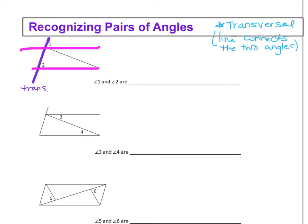This is the line giving us angle two. This other line we do not need — we're going to completely ignore it. Looking at angle one and angle two: one is an exterior angle because it's on the outside of our two coplanar lines, one is an interior angle, and they're both on the same side of the transversal. So angle one and angle two are corresponding angles.